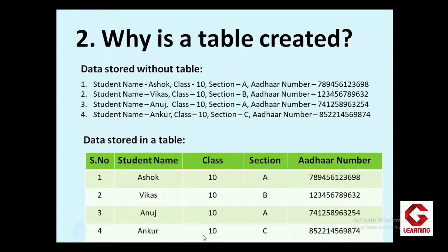The solution is a table. Here you can see that the same data is stored in table format. In this case, serial number, student name, class, section, and roll number — these five texts are typed only once, and thereafter the details of all the students are entered inside the table. Some advantages: first, we can store our data in a more presentable format. Second, analysis of the data can be done very easily. For example, to find how many students are in section A of class 10, you can easily see that two students — Ashok and Anuj — are there.